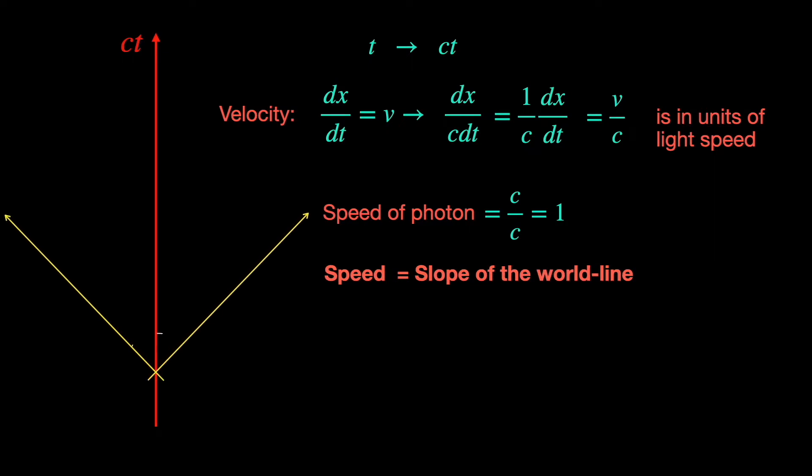Therefore, photon world line has to be a 45 degree straight line, giving slope Δx/cΔt equals tan 45° equals 1.